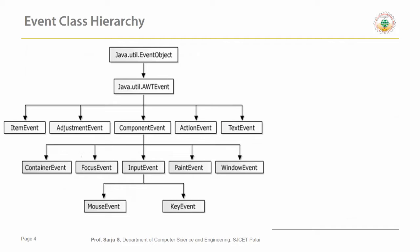When we discuss about the delegation event model, we first have to discuss about the event classes. In this lecture we are going to discuss about the event classes and the event class hierarchy. Only the most frequently used event classes are listed here. At the root of the Java event class hierarchy is the EventObject, which is in the java.util package. It is a superclass for all events. AWTEvent is the subclass of EventObject and contains the main classes used for handling events in Java.